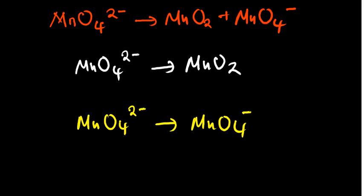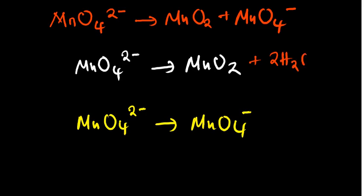We've now split our given equation into its half-reactions. Our next step is to balance all other atoms before oxygen and hydrogen. Looking at our first half-reaction, we only have manganese and oxygen, so we balance manganese first. We only have a single manganese on both ends, so that's already balanced. We now proceed to balance oxygen atoms: on the left we have 4, on the right we have 2. We balance oxygen atoms by adding 2 water molecules, because the 2 water molecules come with 2 oxygen atoms, making it 4 on the right as well.